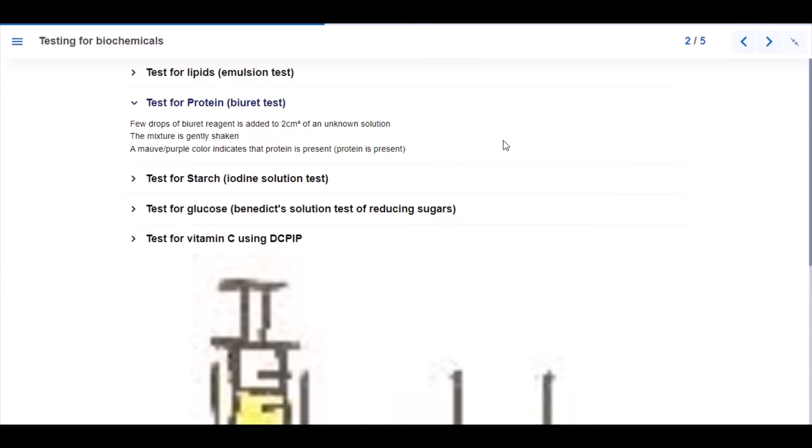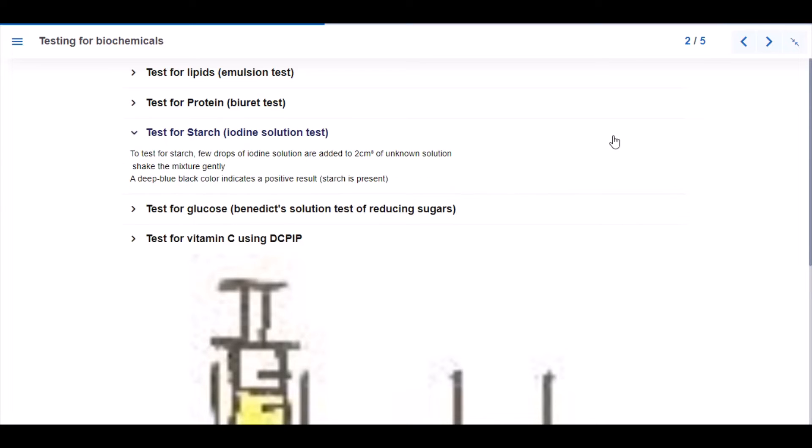Test for starch: a few drops of iodine solution are added to 2 cm³ of unknown solution. A deep blue-black color indicates a positive result and this indicates that starch is present.